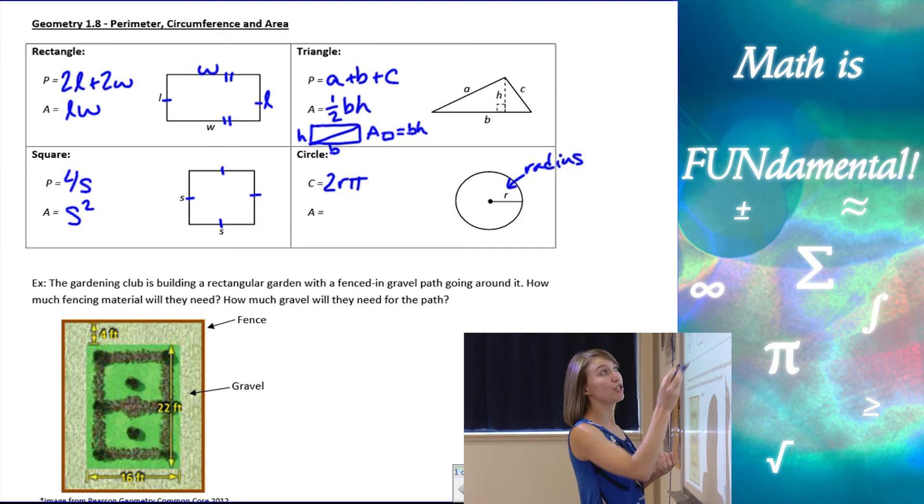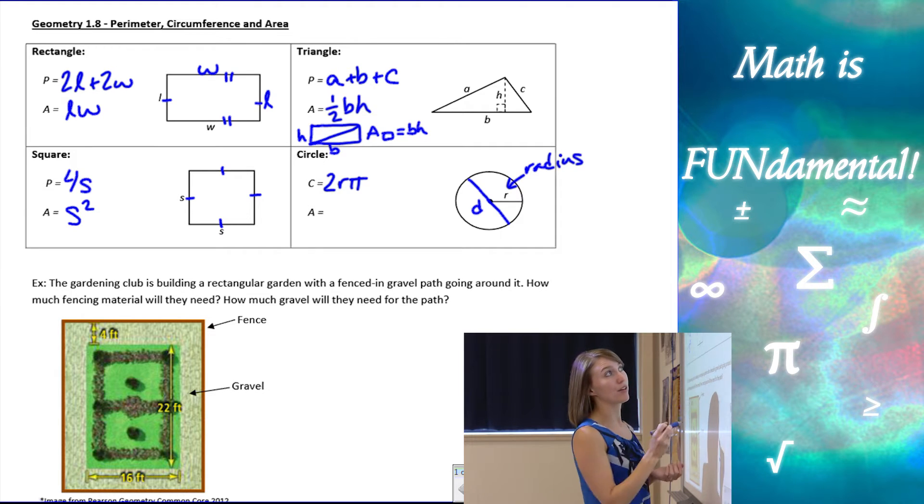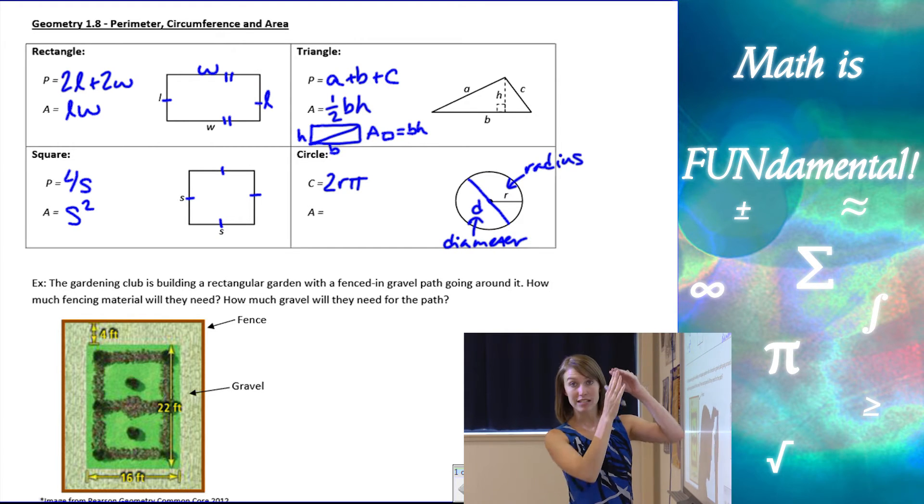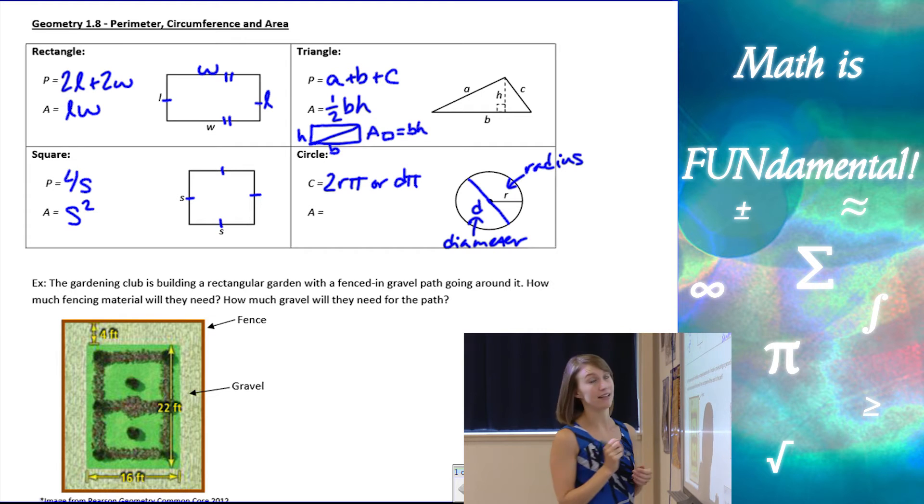Now, if we think about 2 times the radius, we get something called the diameter. Diameter is the length from one side all the way to the other through the center. So I can write this as diameter times pi as well.